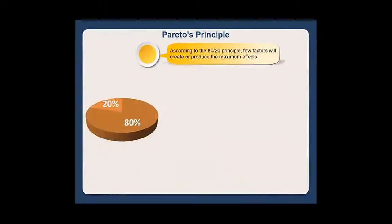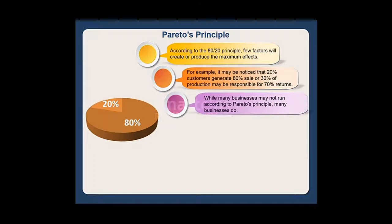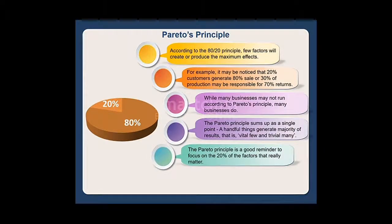According to the 80-20 principle, few factors will create or produce the maximum effects. For example, it may be noticed that 20% of customers generate 80% of sales, or 30% of production may be responsible for 70% of returns. While many businesses may not run according to Pareto's principle, many businesses do. The Pareto principle sums up as a single point: a handful of things generate the majority of results — that is, vital few and trivial many. The Pareto principle is a good reminder to focus on the 20% of factors that really matter.